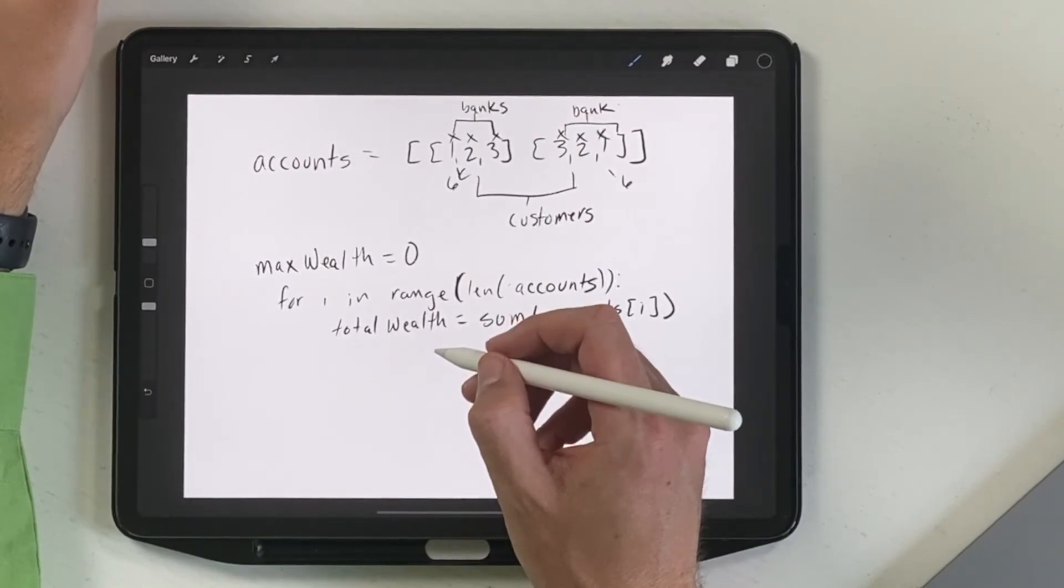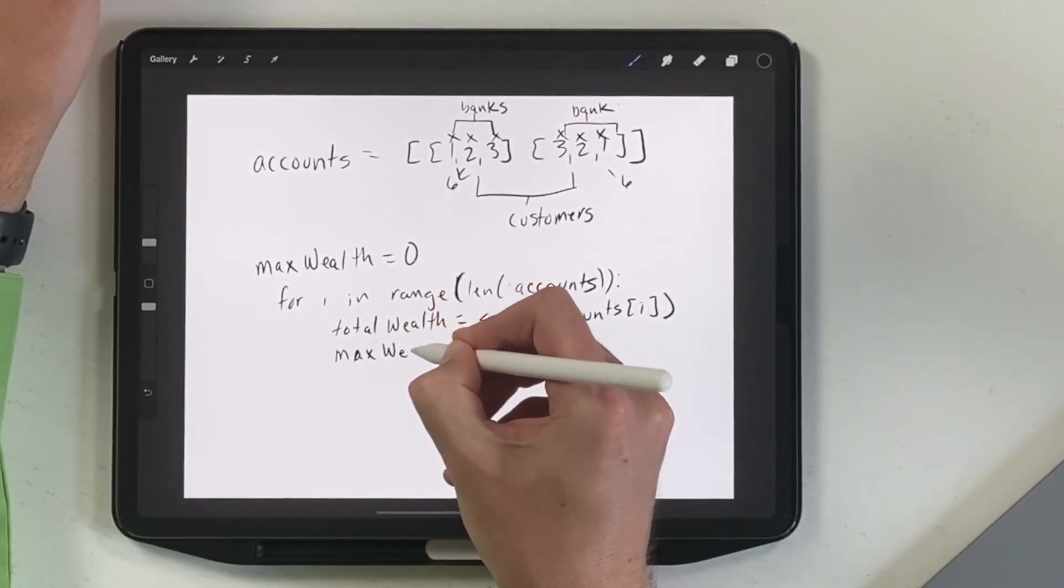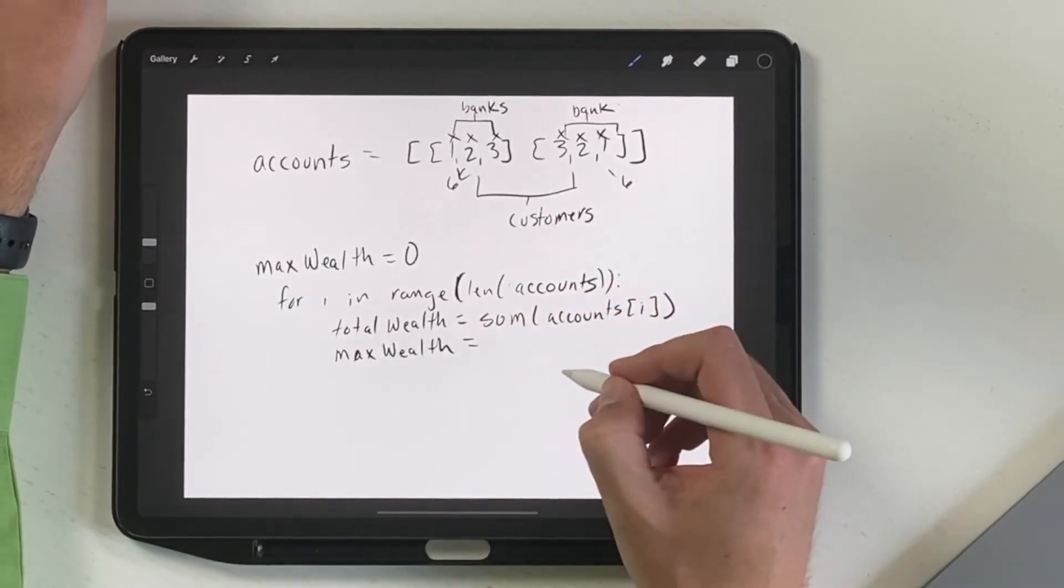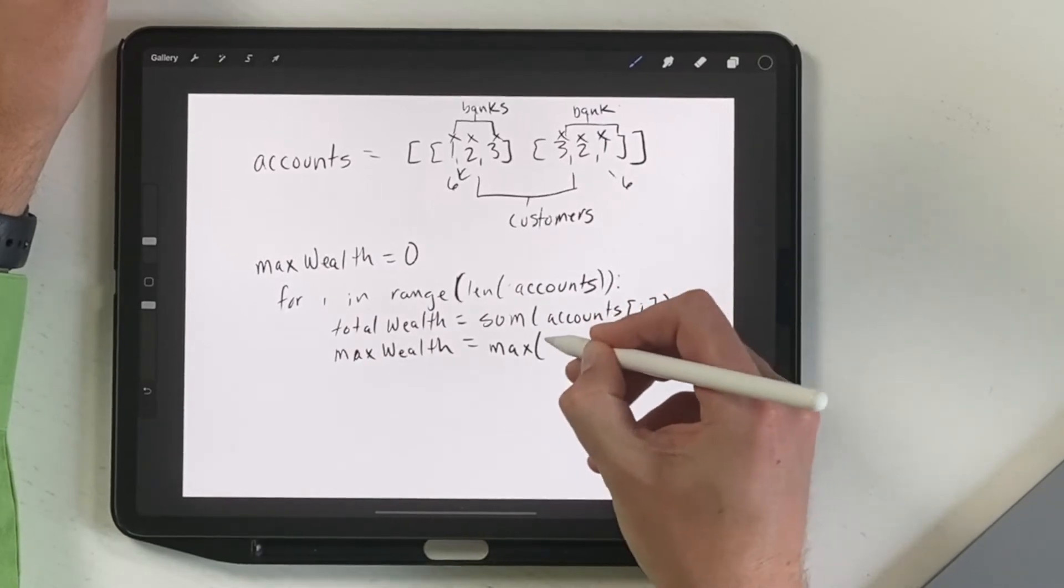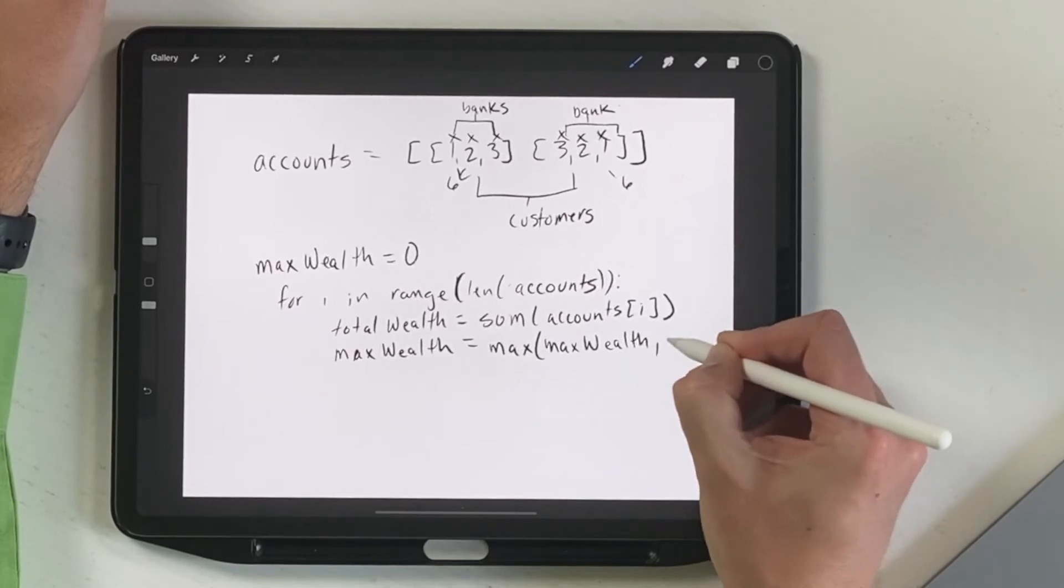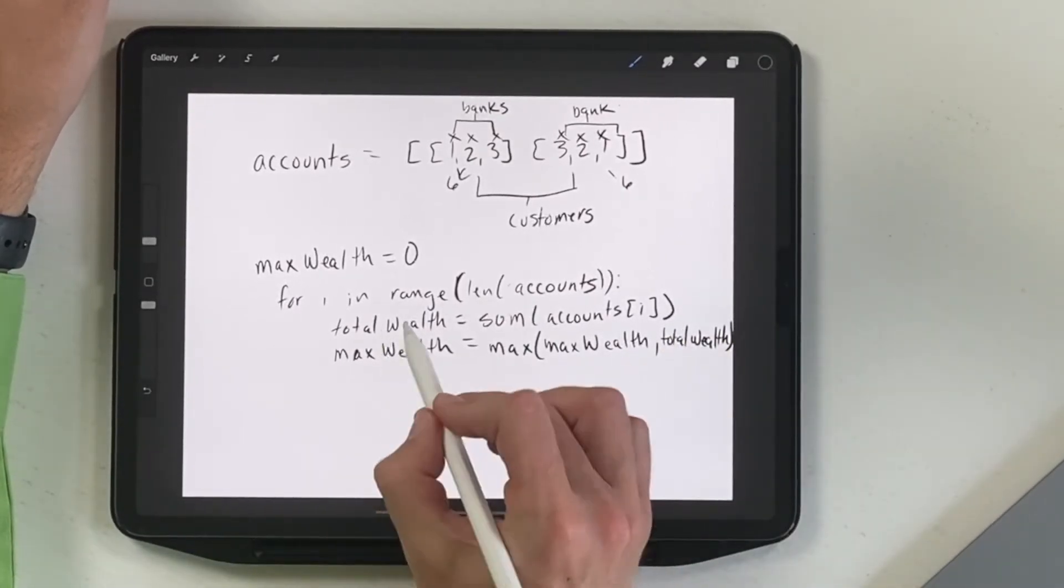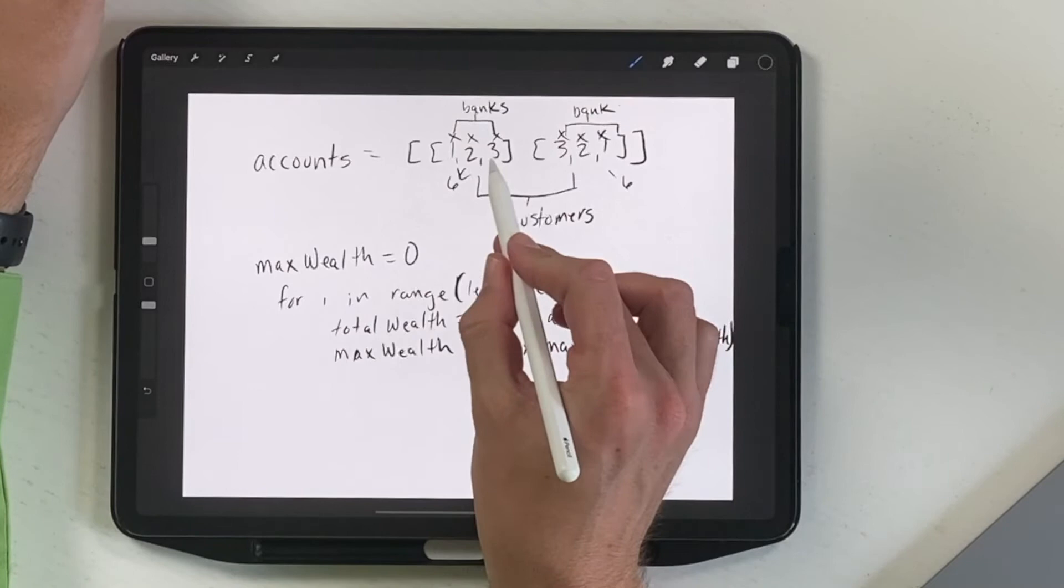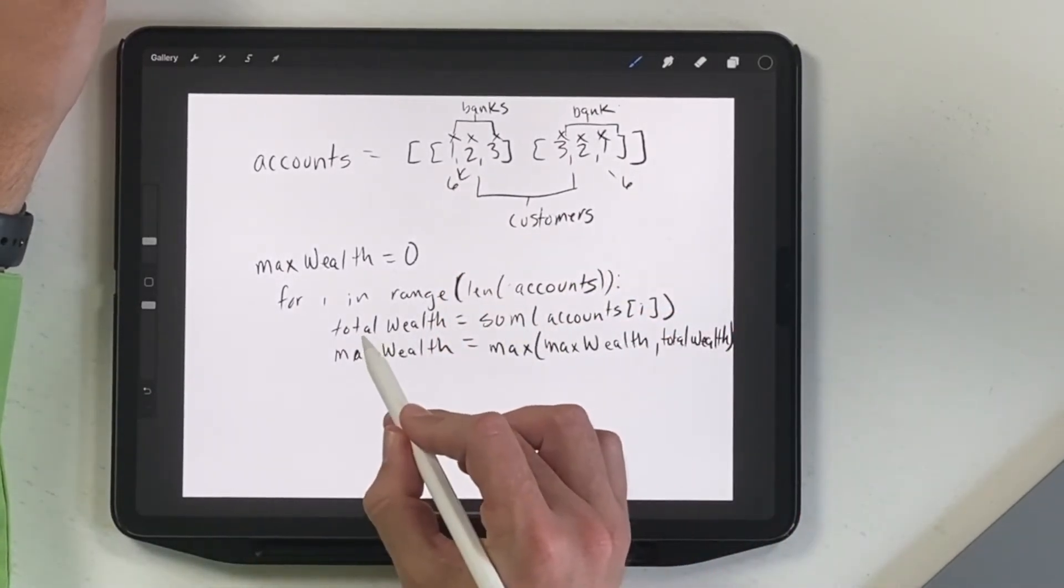Next one, what we're going to have is we're going to find max wealth. And how we're going to calculate max wealth is do max and max wealth. And we're going to compare it with total wealth. So what we're going to do is the first one, we found total wealth, sum of this count. So we've done this, we've added these numbers, and that's given us the sum, which we've stored in total wealth.